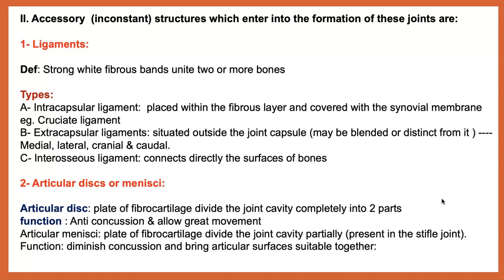The second accessory structure is the articular disc or meniscus. It is present in certain joints such as the stifle joint, because the proximal extremity of the tibia is irregular, so we need something to make the articular surfaces smooth. We have medial and lateral menisci in the stifle joint, which are important for anti-concussion and also to allow greater movement. The stifle joint is given as an example of a composite joint.